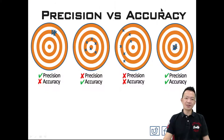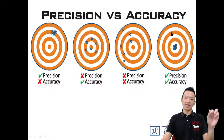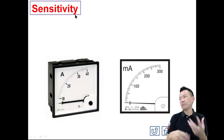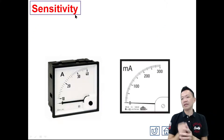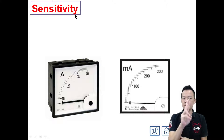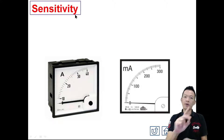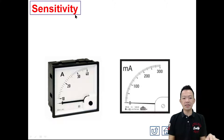Next, the third word: sensitivity. So when you are making a measurement, we have accuracy, we have precision, and we also need sensitivity in the measuring tools.